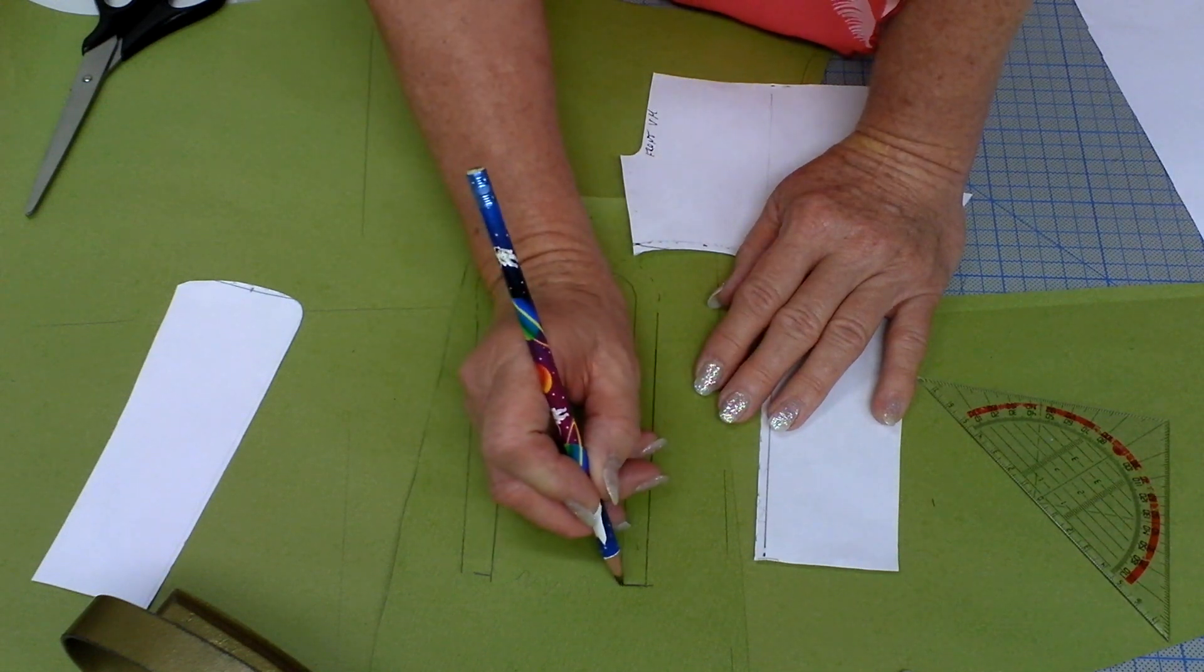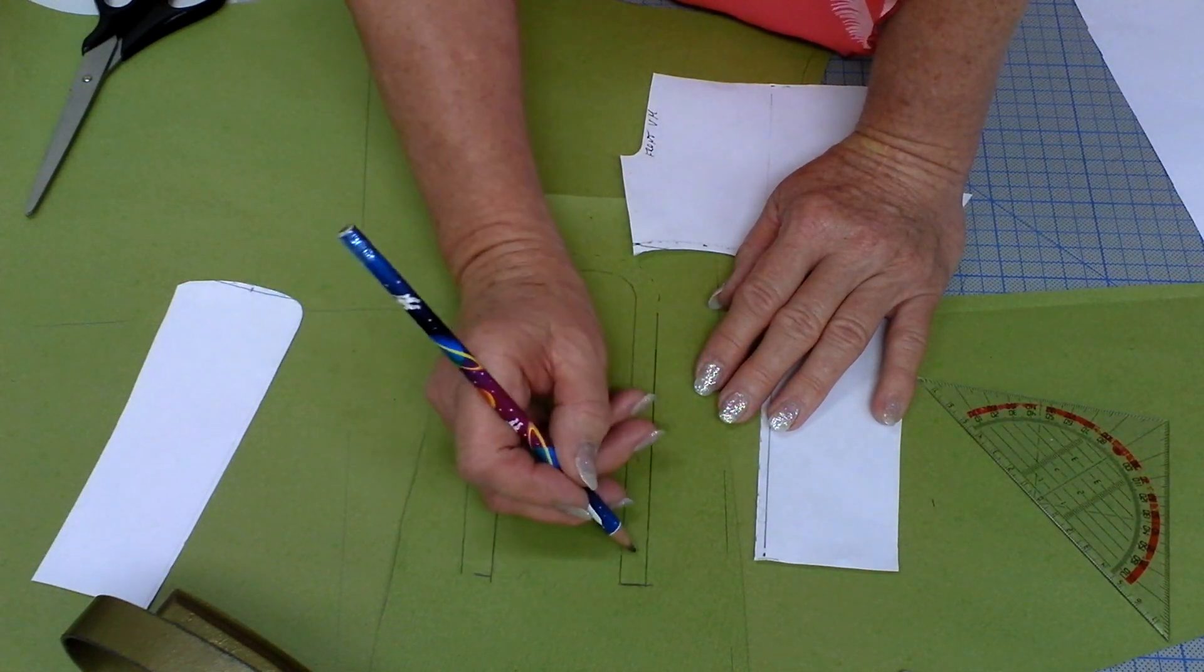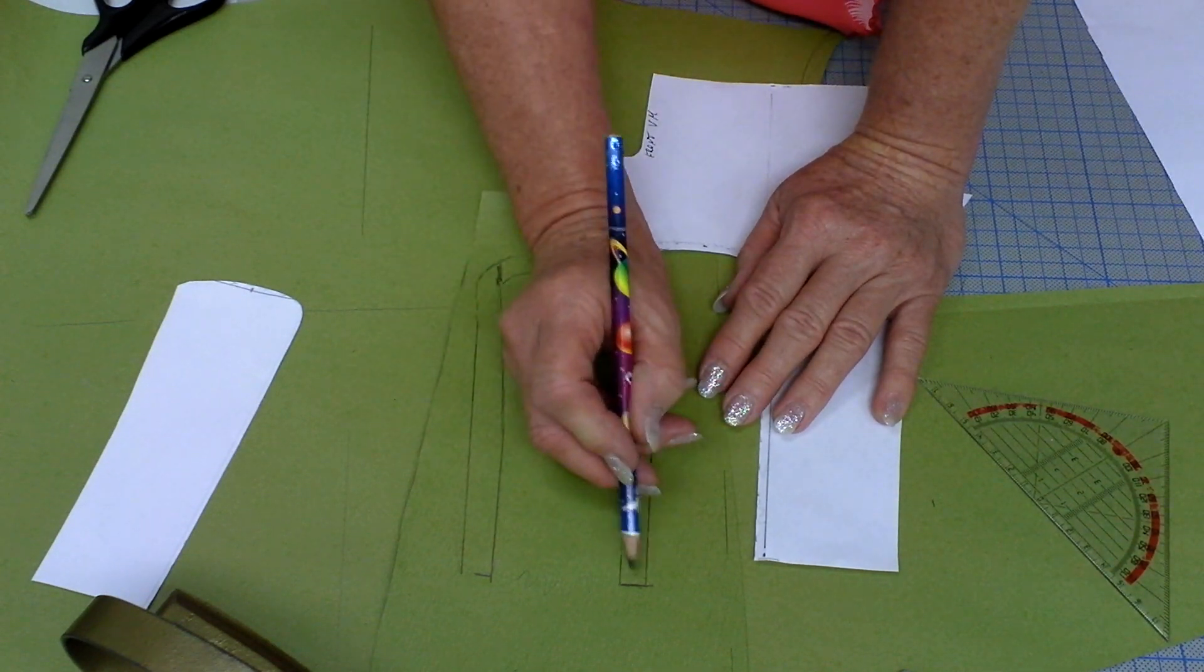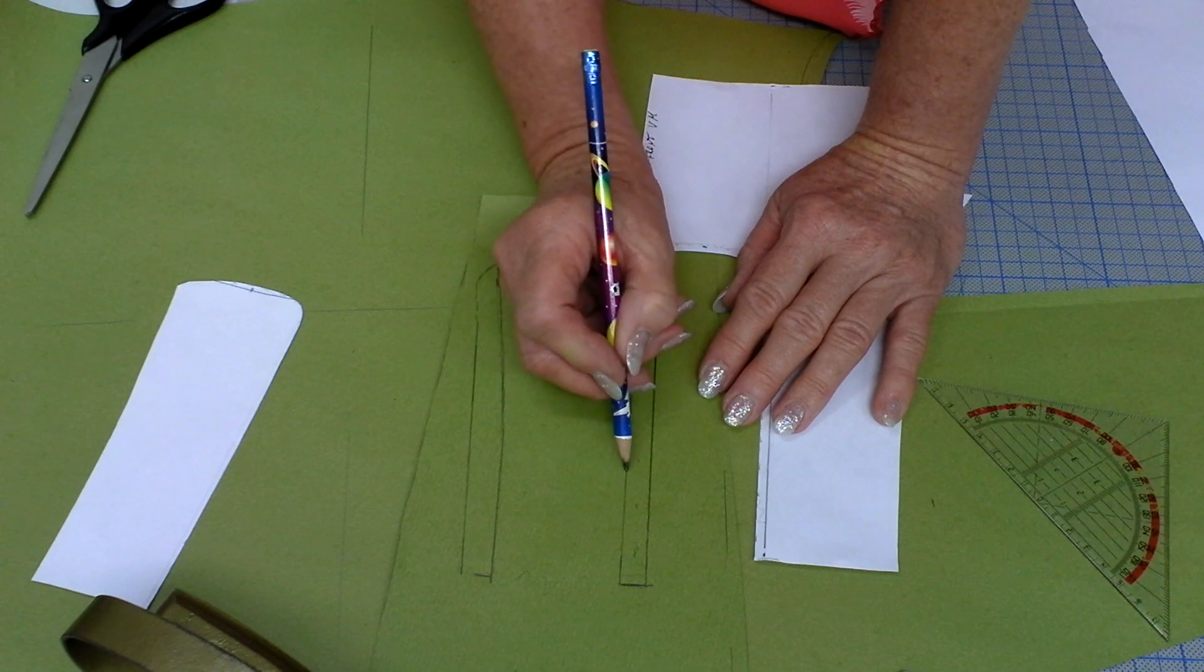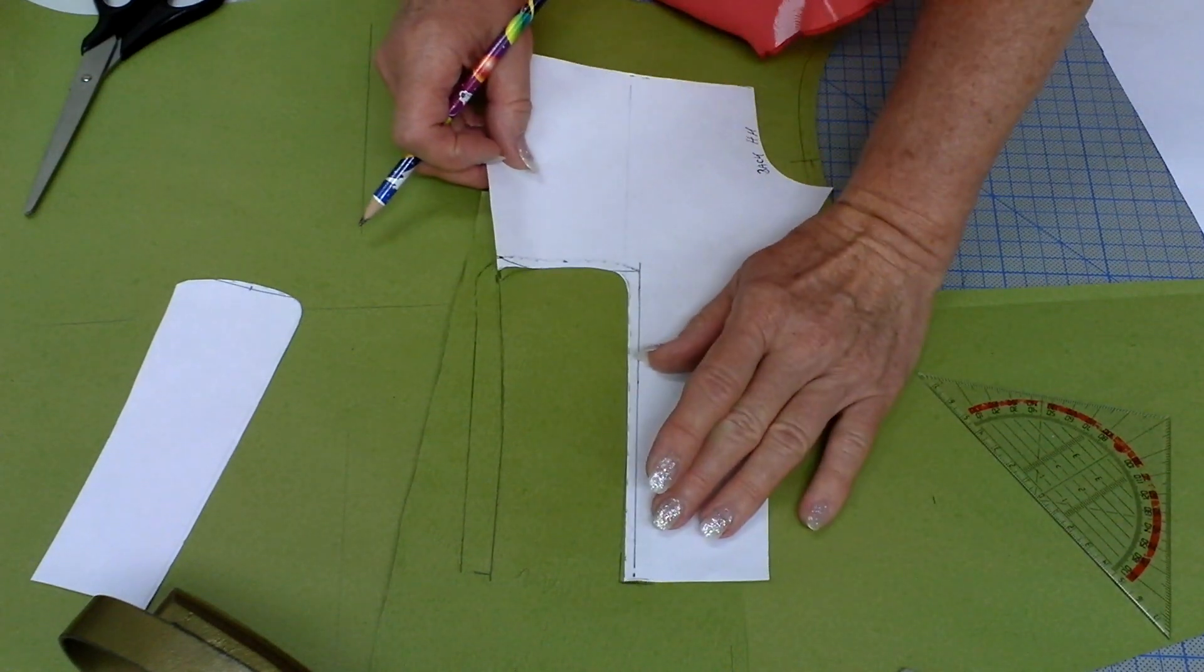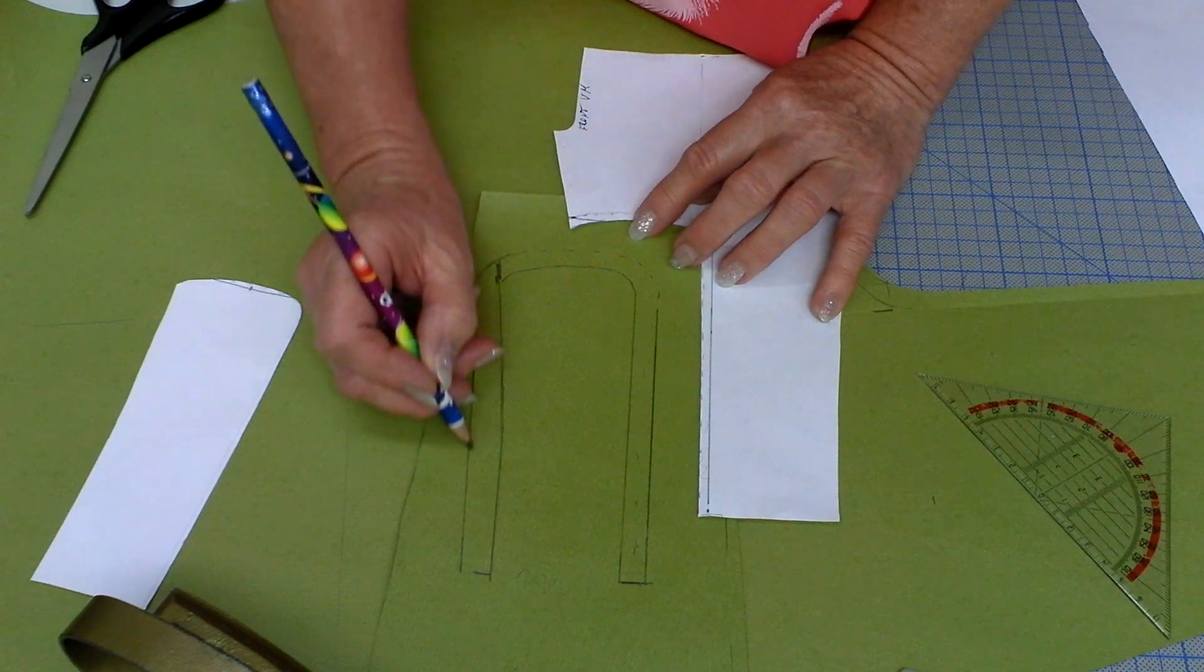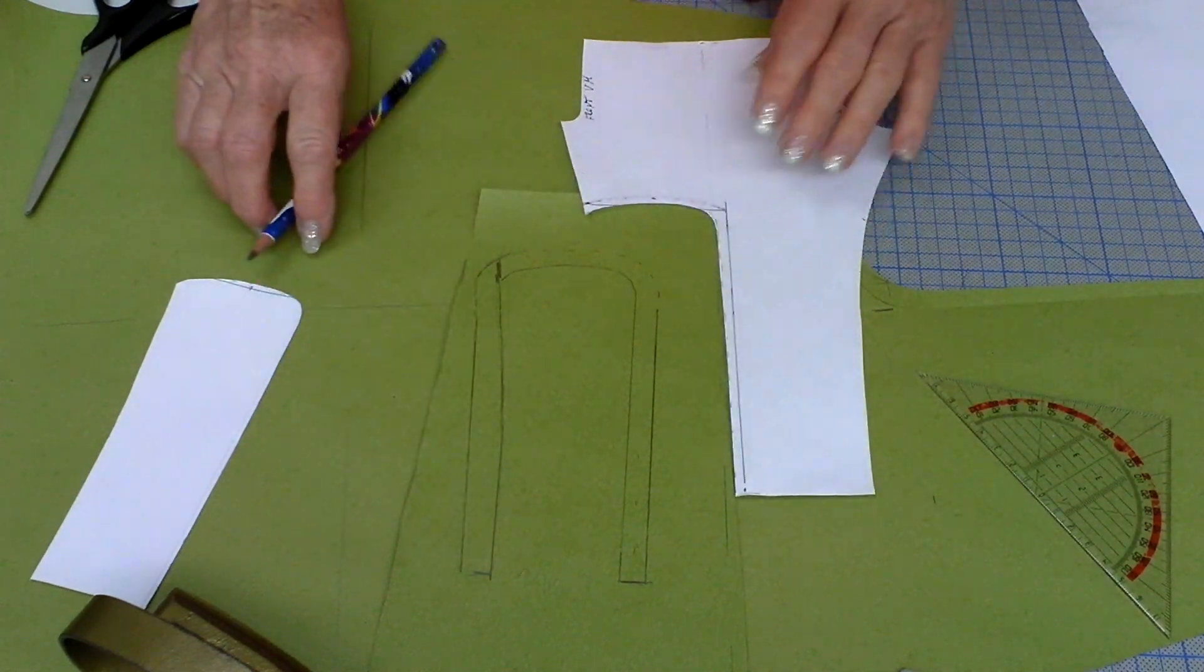And from this edge, depending on where you want to put the buttonholes later, I suggest you cut a four centimeter wide piece. That means from your original edge now you add all the way around four centimeters and cut this part out.